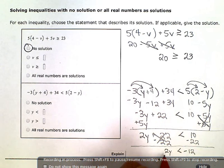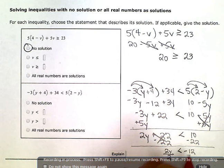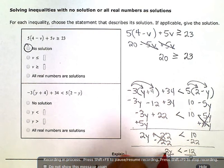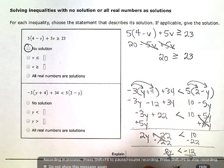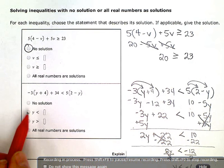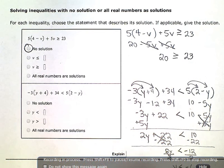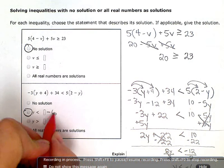And then my last step is to divide out my coefficient, and I'm left with y is less than negative 6. So I was able to solve this one all the way through. My answer is y is less than. So I'm going to choose this and fill in negative 6.